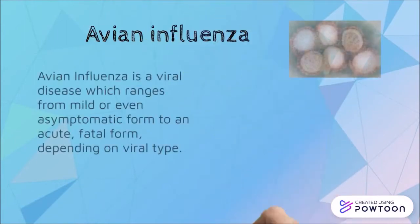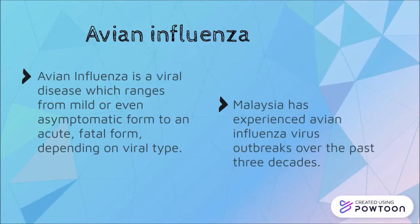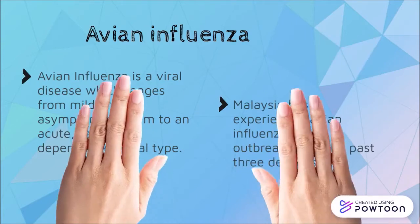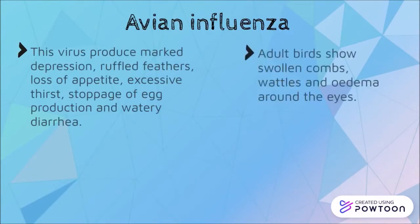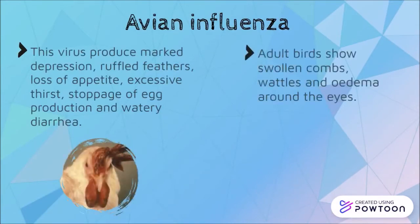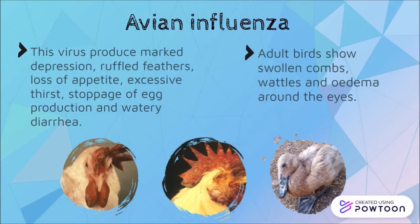An example disease that can be transmitted by flies is avian influenza. Malaysia has experienced avian influenza virus outbreaks over the past three decades. It is a viral disease which can be fatal. When a poultry animal is infected with avian influenza, the virus will produce a series of different symptoms including depression, ruffled feathers, loss of appetite, and many more.